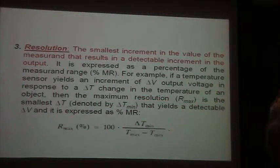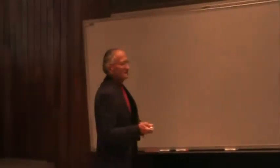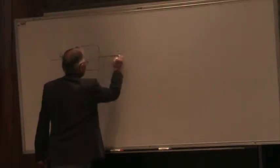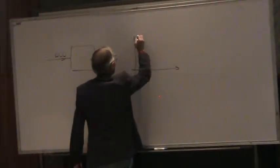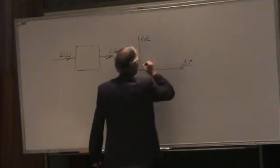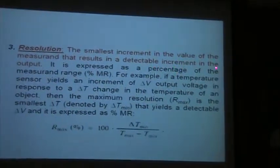Resolution — a very important parameter. It is the smallest increment in the value of the measurement that results in a detectable increment in the output. For example, taking a gas sensor: I measure carbon monoxide concentration and get a resistance change. The calibration transfer characteristic is resistance versus gas concentration — let's assume it's a nice linear characteristic.